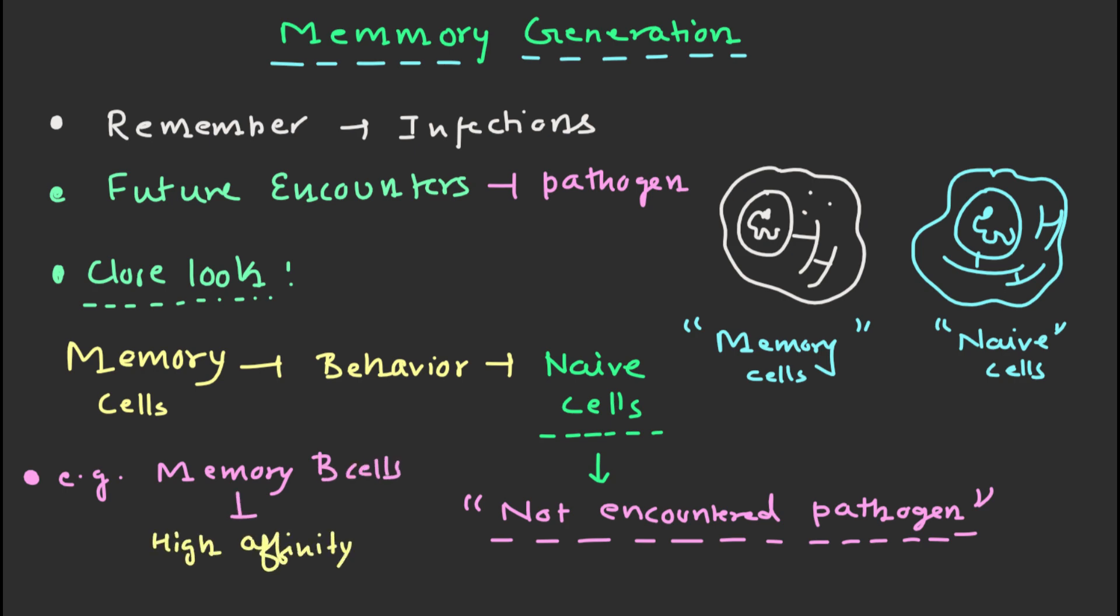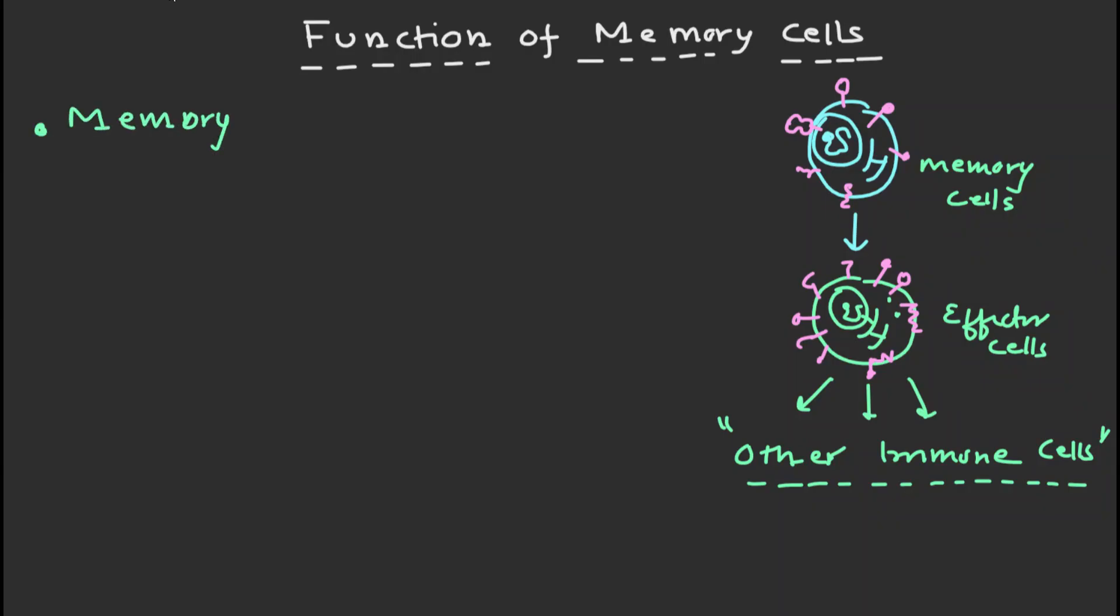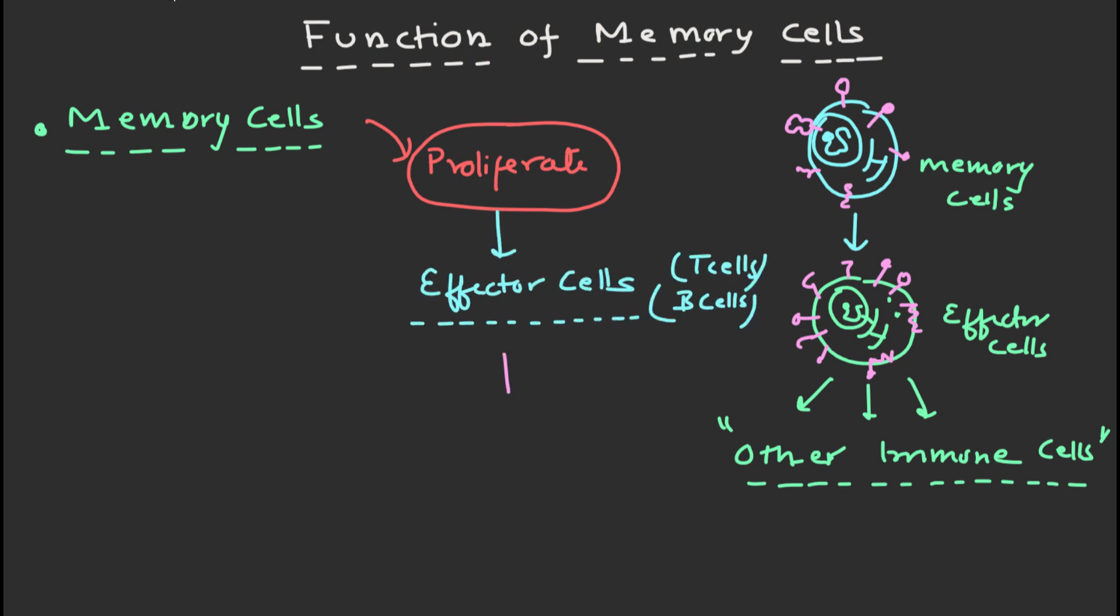Memory T cells can rapidly proliferate and differentiate into effector cells, which can kill infected cells or activate other immune cells. In addition, memory cells can persist for years and even decades in our body, providing long-term protection against the same pathogen.